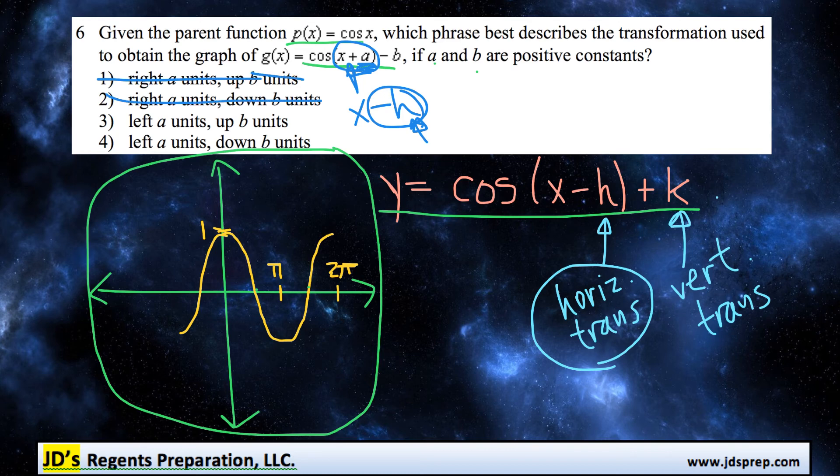And then we also know that b is a positive constant, and it's being subtracted, so that means it's going to move b units down. And that matches option number 4.